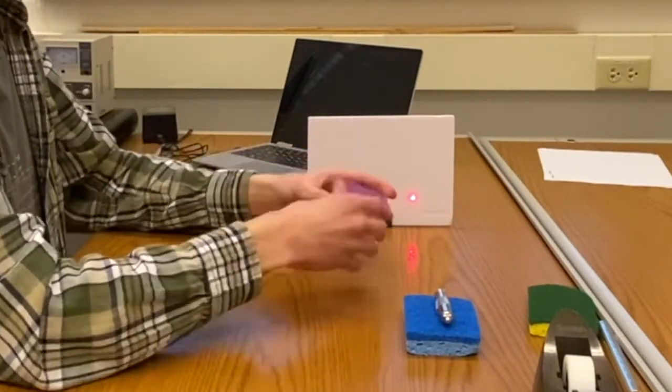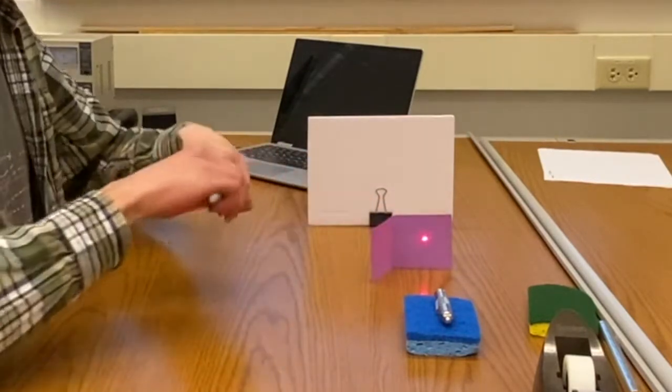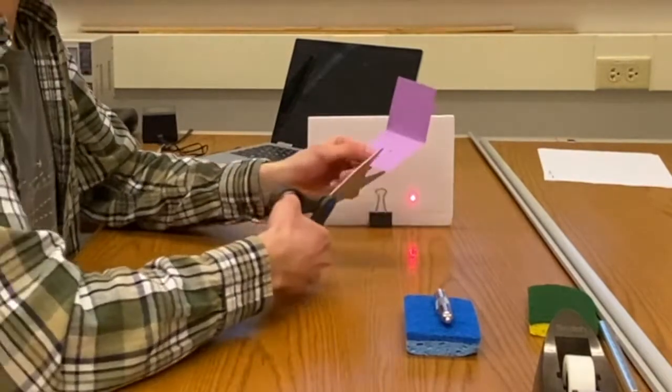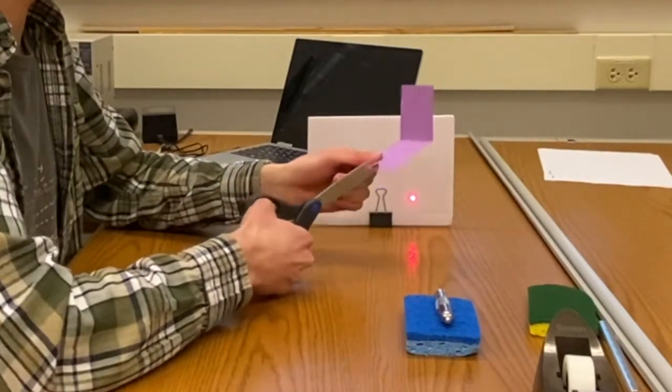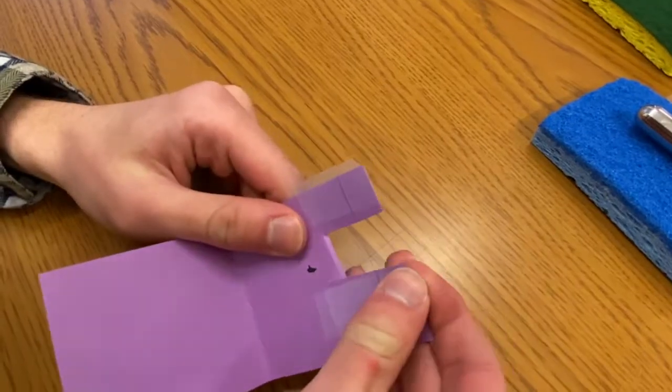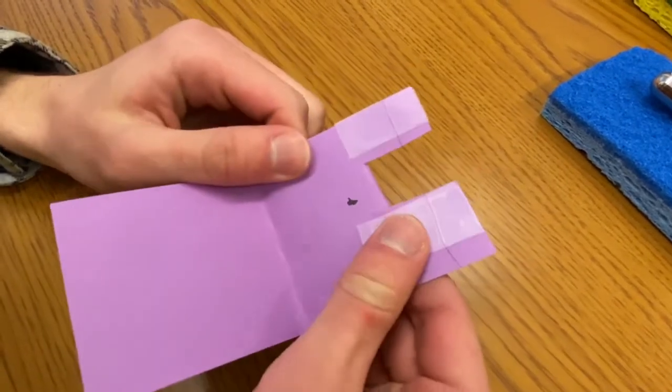Fold your card in half and place it in front of the laser to see where it hits. Mark that spot with a marker and then cut a little window into your card. Now you need to tape your hair across that gap. Make sure that you get the hair to be straight and pretty tight.